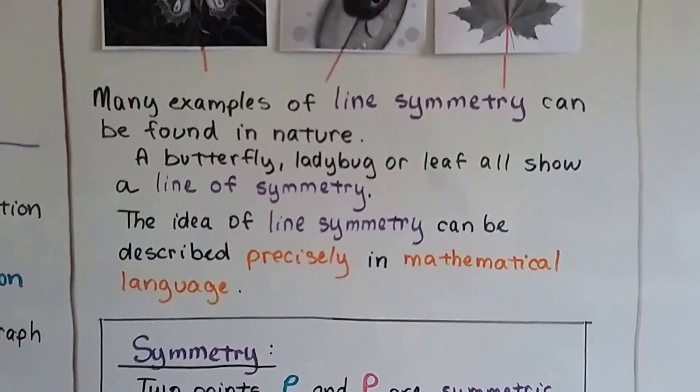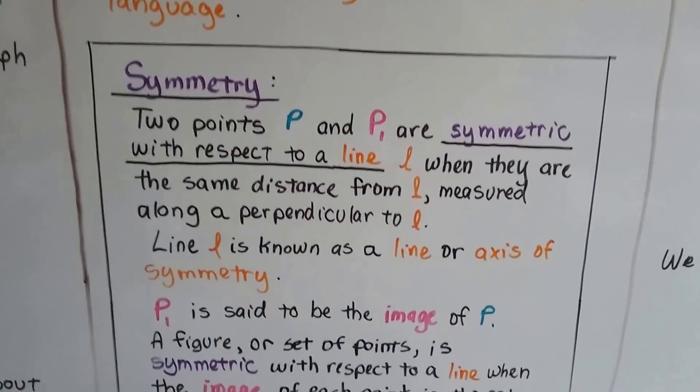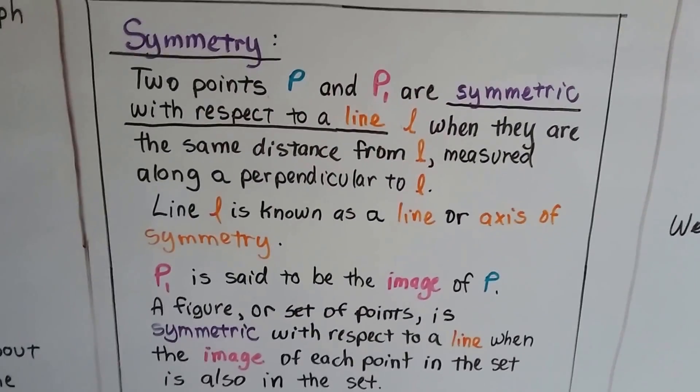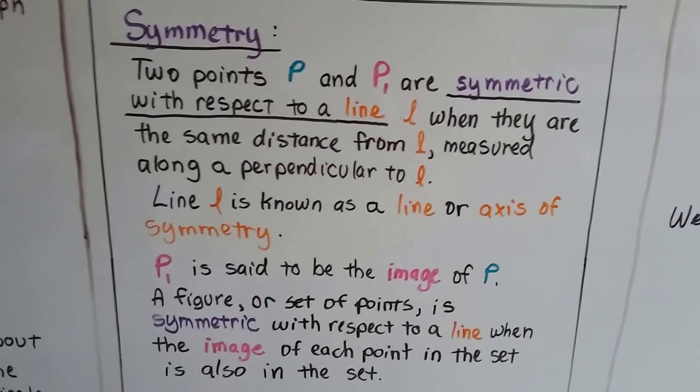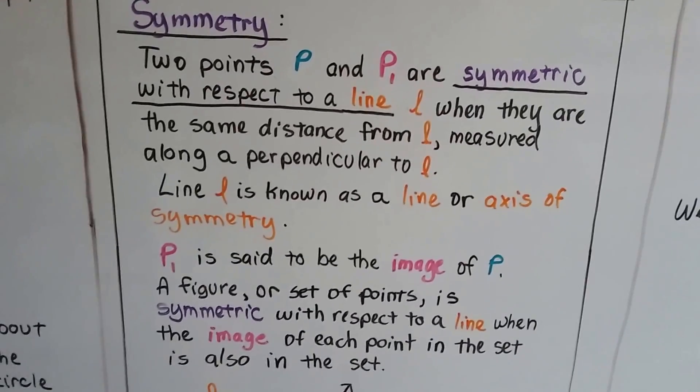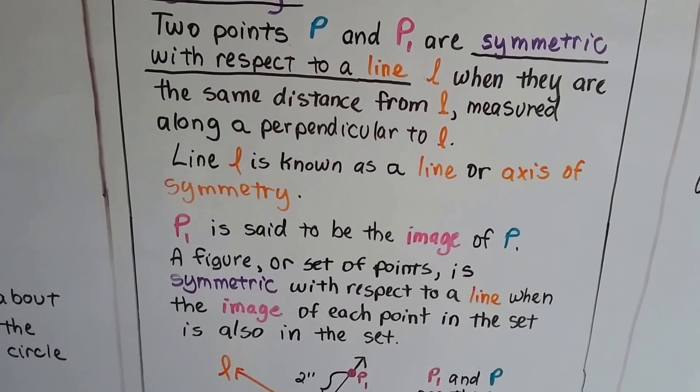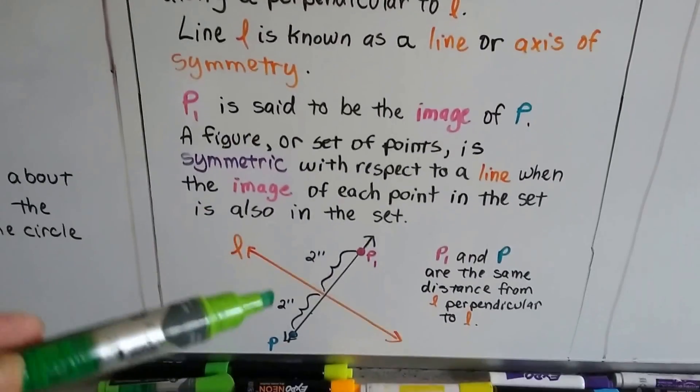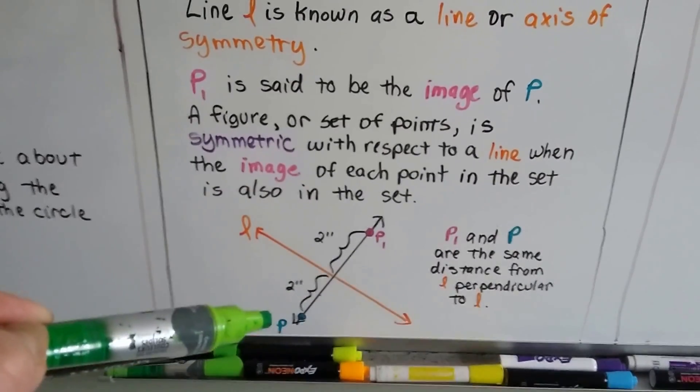The idea of line symmetry can be described precisely in mathematical language. So I have a definition for you for symmetry. Two points, p and p sub 1 are symmetric with respect to a line L when they are the same distance from L measured along a perpendicular to L. So what that means is, here's L, and p is right here,